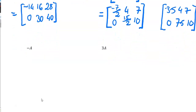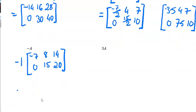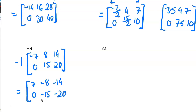Here we've got negative A for the two by three matrix — that's the same as negative one times by our matrix with elements negative seven, eight, fourteen, zero, fifteen, twenty. Negative one times negative seven is positive seven, negative one times eight is negative eight, negative one times fourteen is negative fourteen, then zero, negative fifteen, and negative twenty.